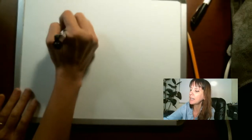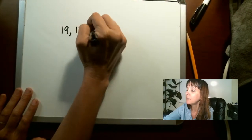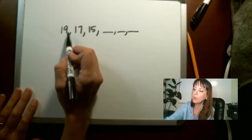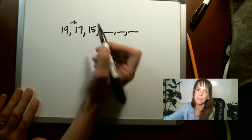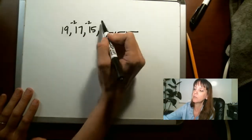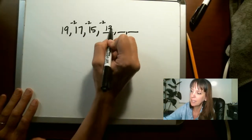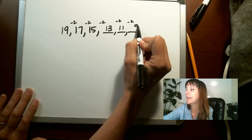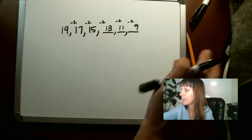Sometimes they go backwards though. What if it's nineteen, seventeen, fifteen — find the next three digits? We go from nineteen to seventeen, we subtract two. From seventeen to fifteen, we subtract two. From fifteen, subtract two, we get thirteen. Subtract two, we get eleven. Subtract two, we get nine. So you're seeing that sequence or that pattern right there.